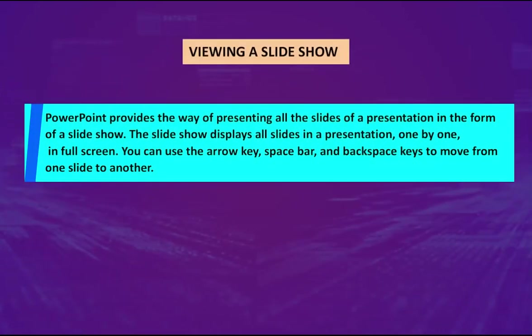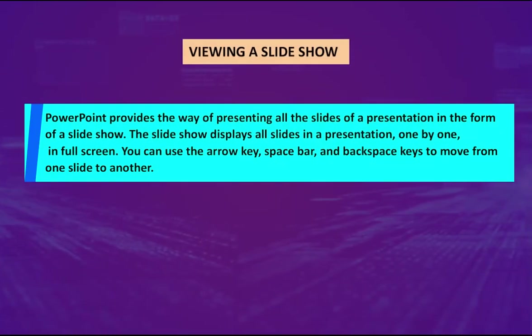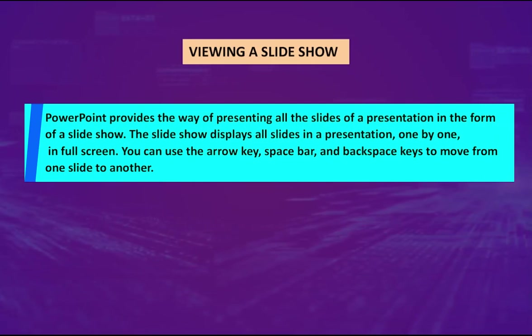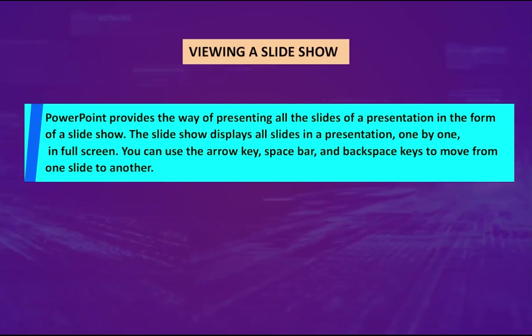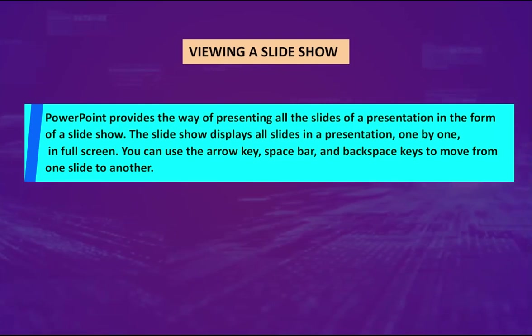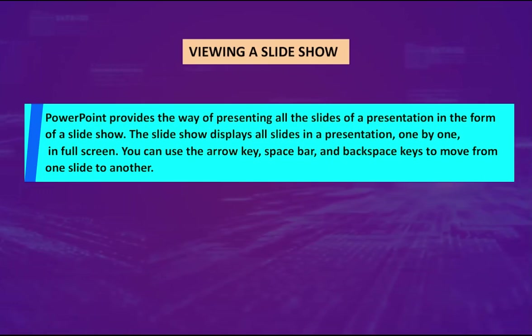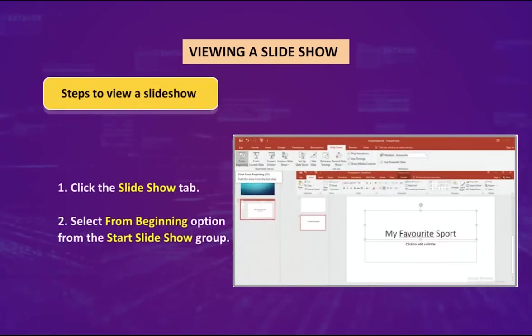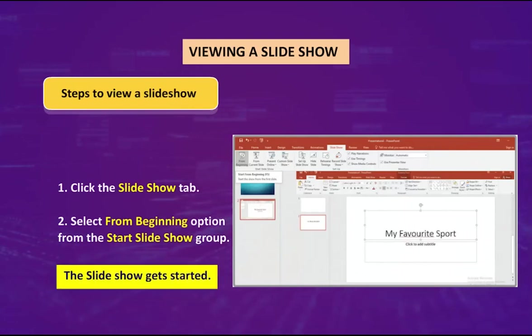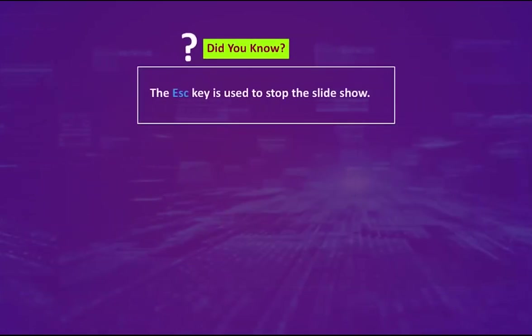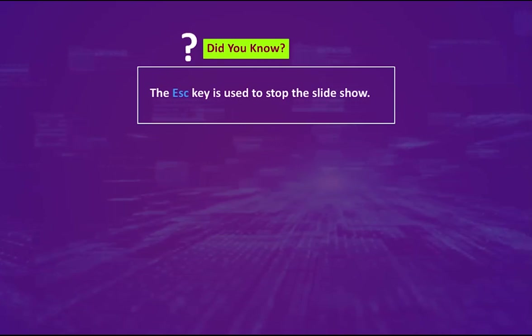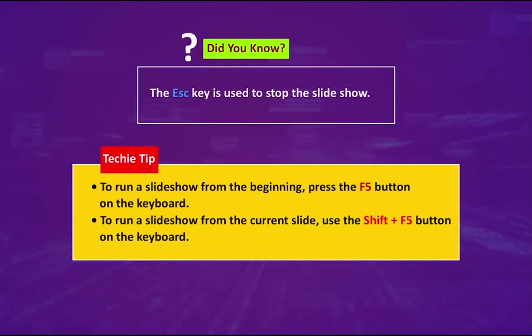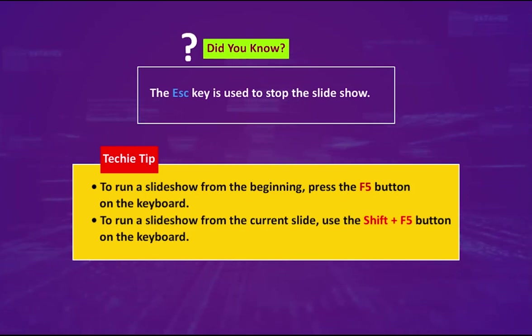Viewing a slideshow: PowerPoint provides a way of presenting all the slides of a presentation as a slideshow. The slideshow displays all slides one by one in full screen. You can use the arrow keys, space bar, and backspace keys to move from one slide to another. Steps to view a slideshow: click the Slideshow tab and select the From Beginning option from the Start Slideshow group. Did you know: the ESC key is used to stop the slideshow. Techie tip: Press F5 to run a slideshow from the beginning, or Shift+F5 to run it from the current slide.